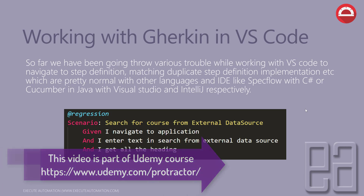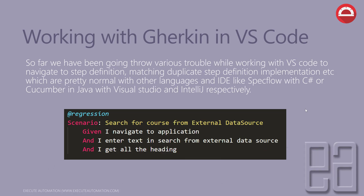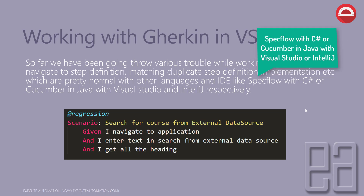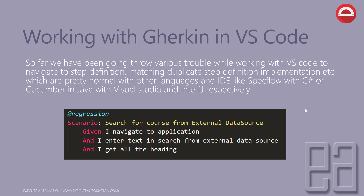Working with Gherkin in Visual Studio Code — so far we have been going through various troubles while working with Visual Studio Code to navigate to step definitions, matching duplicate step definitions, implementations, etc., which are pretty normal and easy with other languages and IDEs like SpecFlow with C# or Cucumber in Java with Visual Studio and IntelliJ IDE respectively. As you can see in the screenshot, this is how our scenario looks — it's plain text and there is no way to navigate to a particular step definition from a feature step.